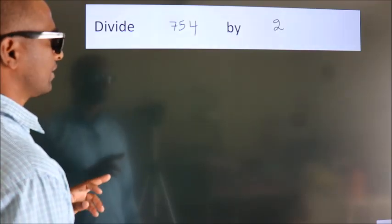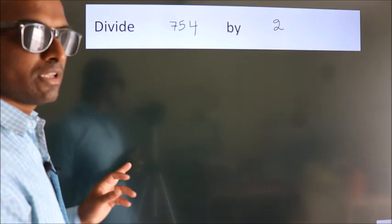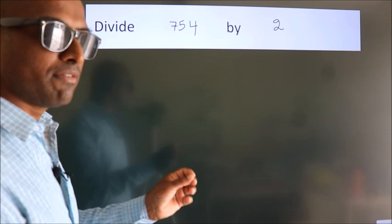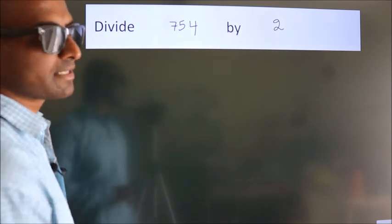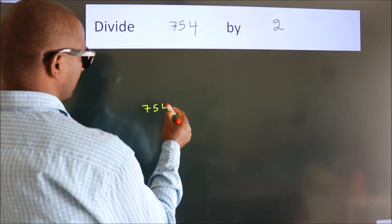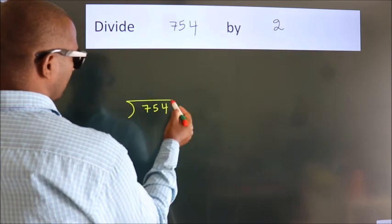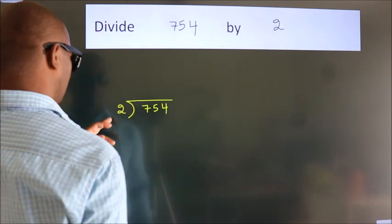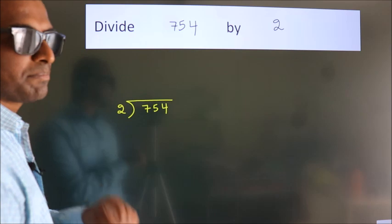Divide 754 by 2. To do this division, we should frame it in this way. 754 here, 2 here. This is your step 1.